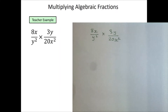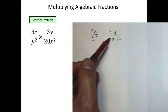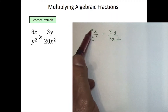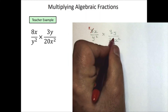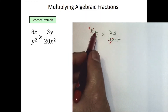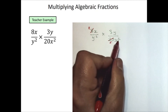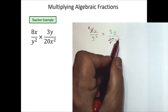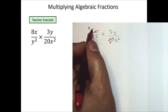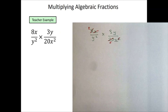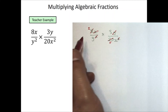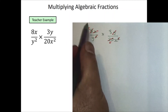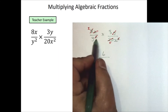In this example we've got 8x divided by y² and 3y divided by 20x². I can cancel diagonally — the 8 and the 20 have a highest common factor of 4, so dividing both by 4 gives 2 and 5. For x and x², since x² means x times x, I can cancel one x from each, leaving one x remaining. The y's cancel similarly. So I'm left with 2 times 3 on the numerator and 5xy on the denominator.